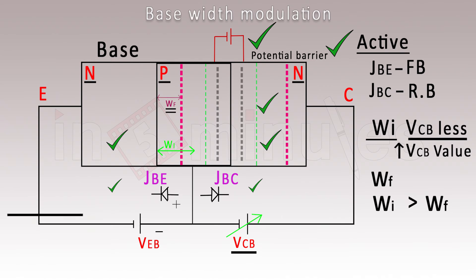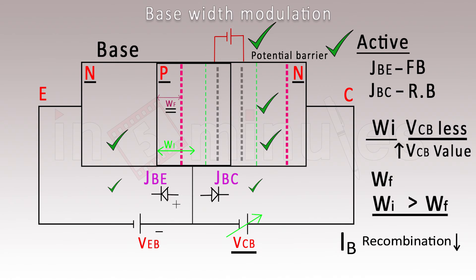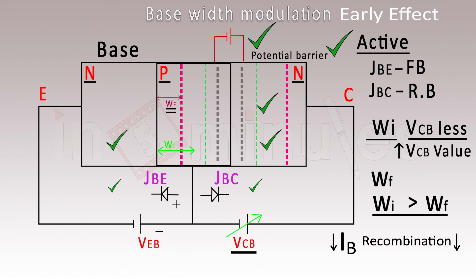What is the effect of a decreasing base width on IB? As the base width decreases, recombination in the base decreases. When recombination decreases, the current generated due to recombination also decreases. This is the effect of Base Width Modulation, also called the Early Effect. Because the base width decreases, the base current IB decreases.